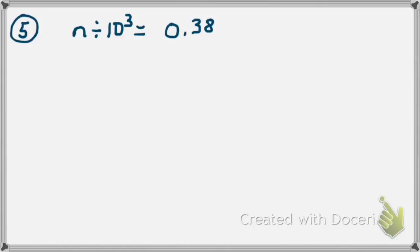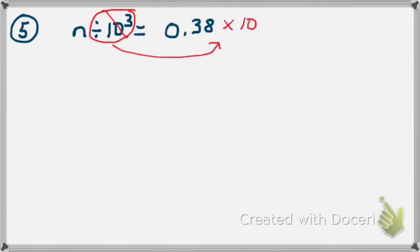Example number 5 is also an algebra problem, but the variable is in a different spot, so it's important we see how to solve it. I have n divided by 10 to the 3rd equals 0 and 38 hundredths. For algebra, I can take the operation and number on this side — divided by 10 to the 3rd power — and put it on the opposite side of the equal sign, changing it to the opposite operation. What's the opposite of division? Multiplication. So I'll say times 10 to the 3rd power. Now I need to solve 0 and 38 hundredths times 10 to the 3rd. 10 to the 3rd power is greater than 1, which means I move my decimal to the right three places since my exponent is 3.